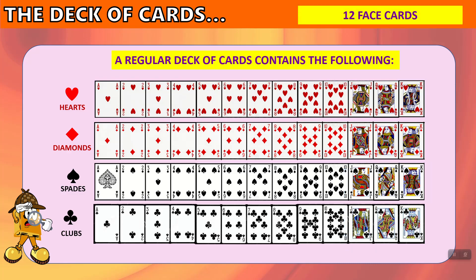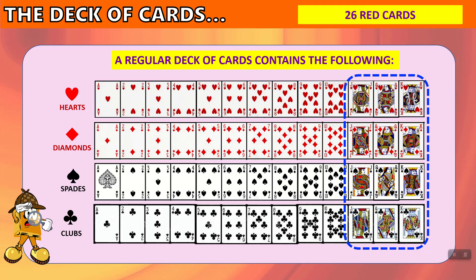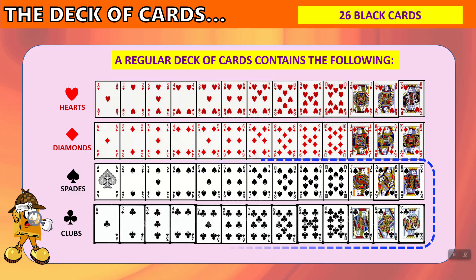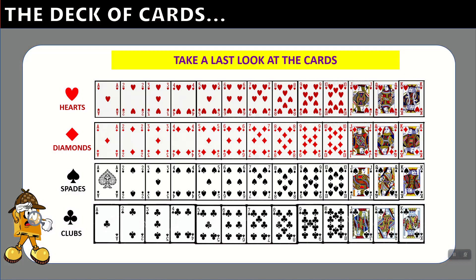There are 12 face cards. Sometimes people count aces as face cards, but there are no faces on the aces — the face cards are the cards with an actual person or face on them: jack, queen, and king. There are 3 from each suit — 3 hearts, 3 diamonds, 3 clubs, 3 spades — making 12 face cards total. There are 26 red cards (13 hearts plus 13 diamonds) and 26 black cards (13 spades plus 13 clubs).